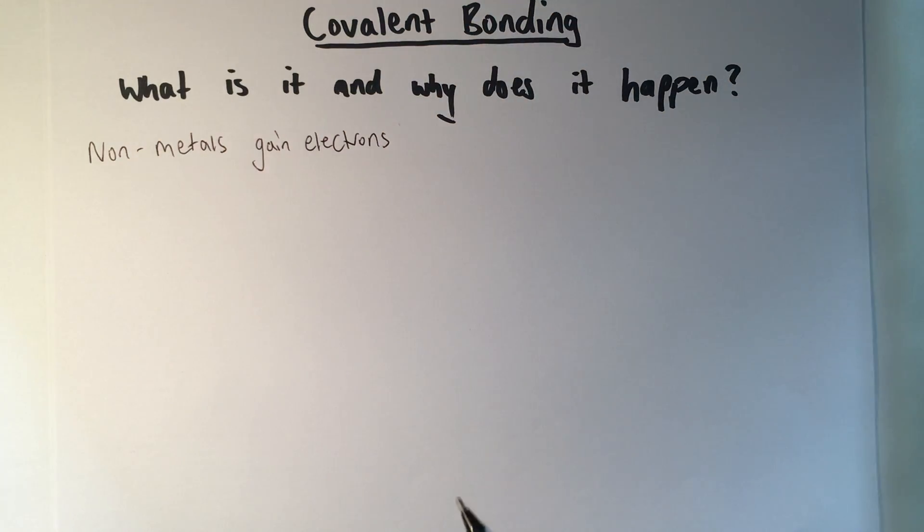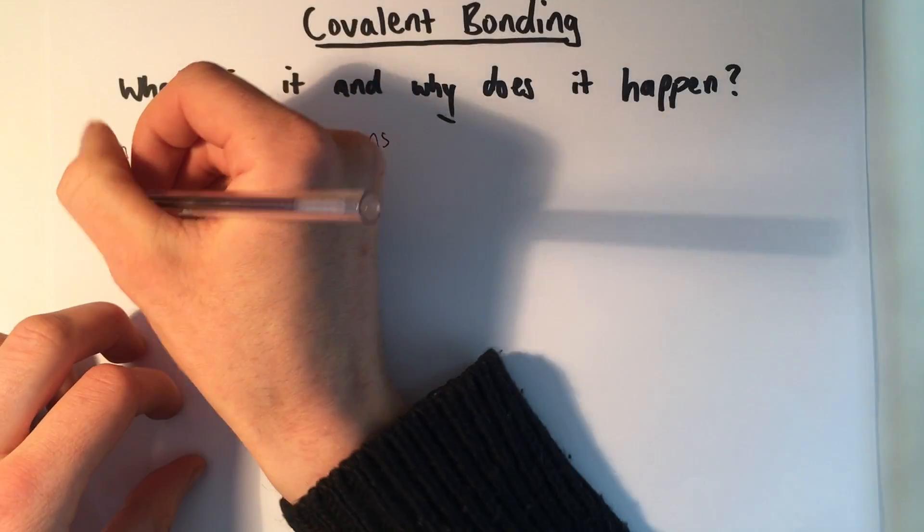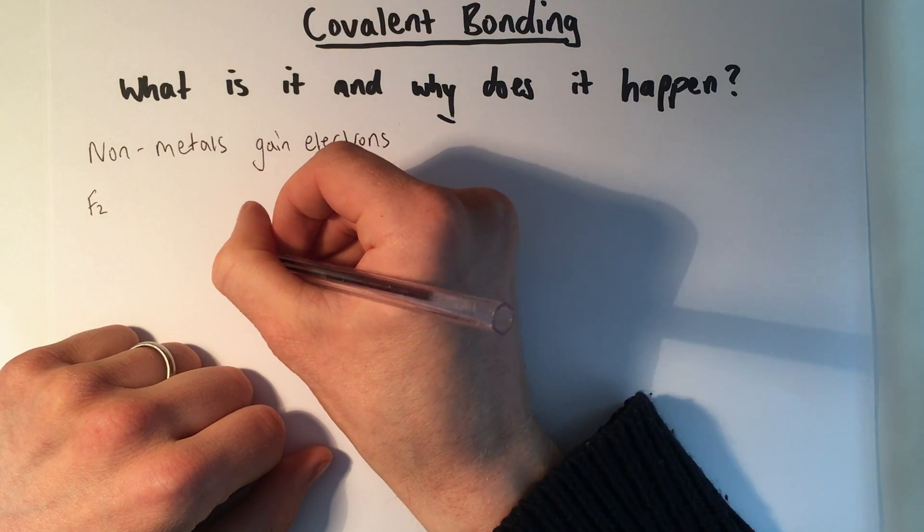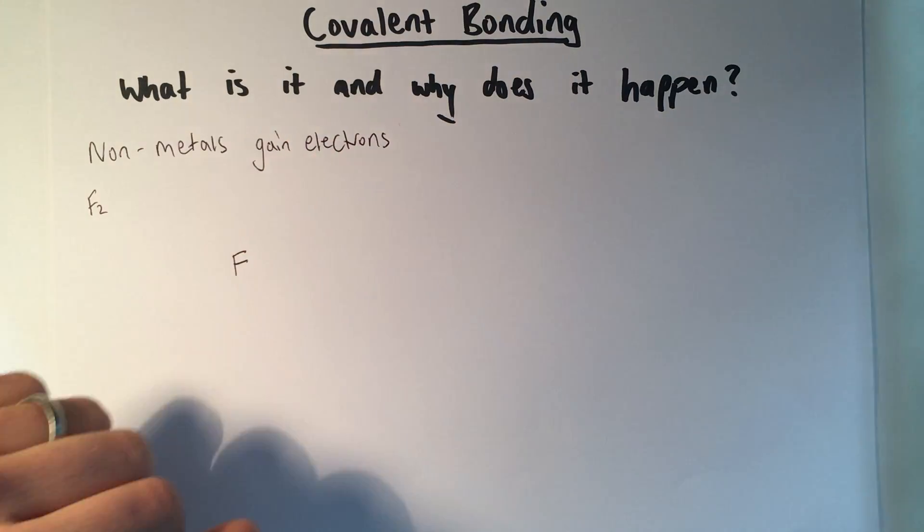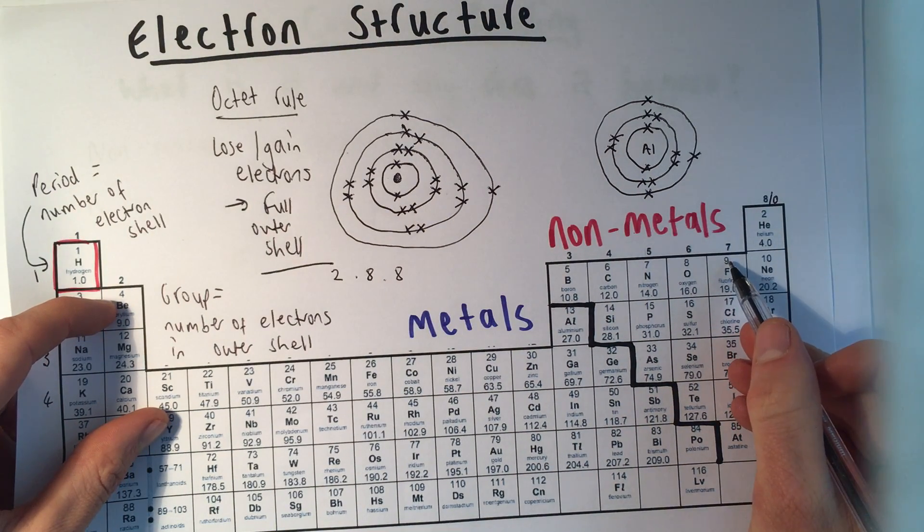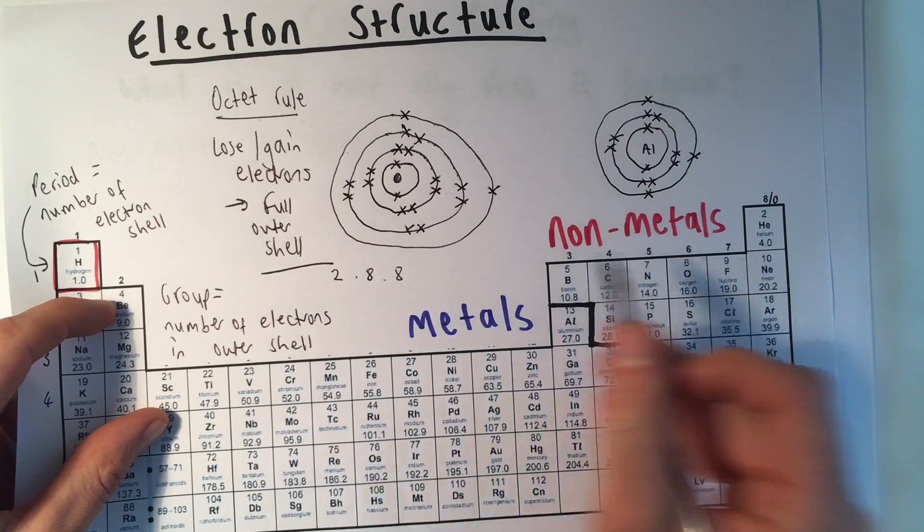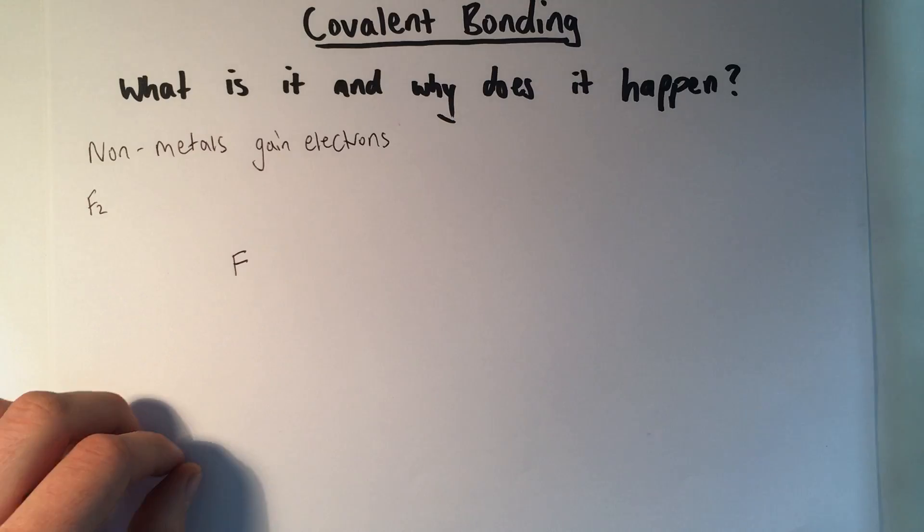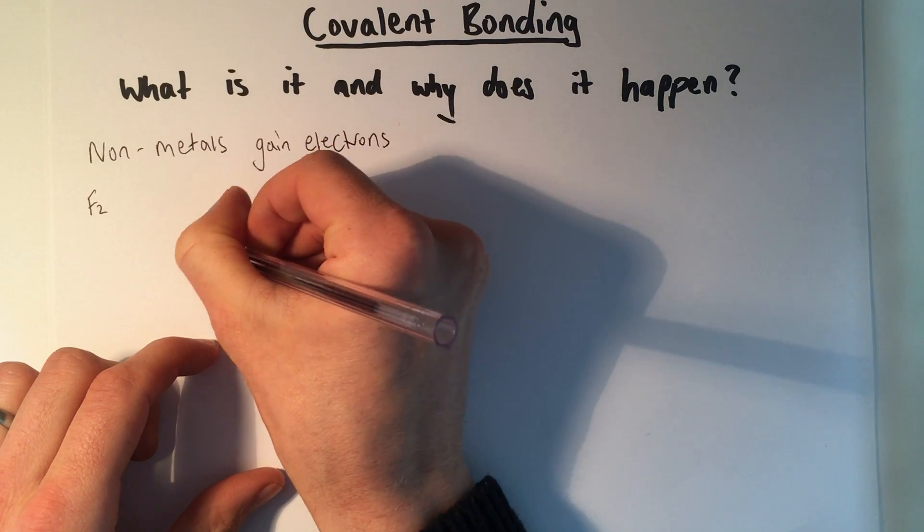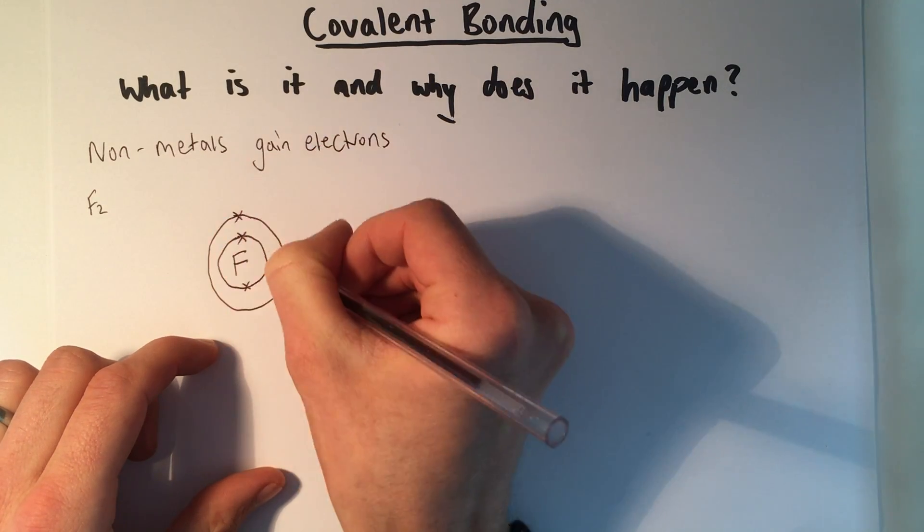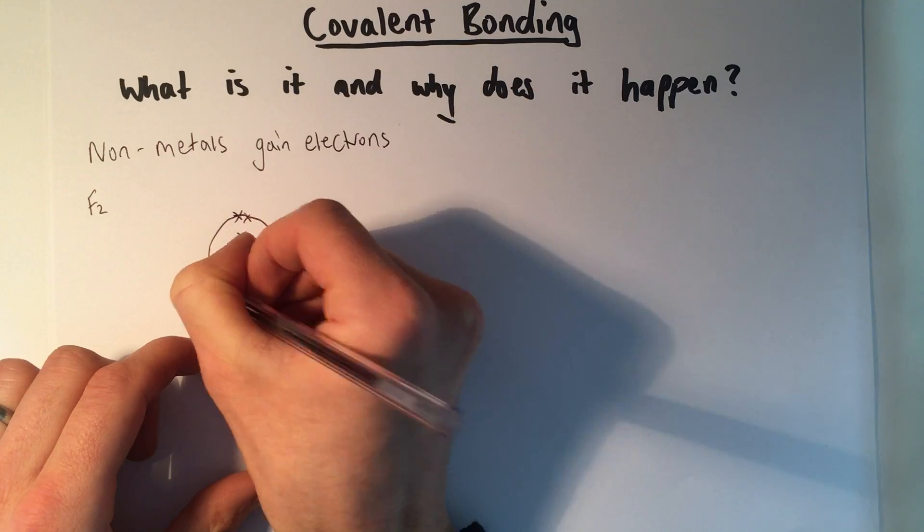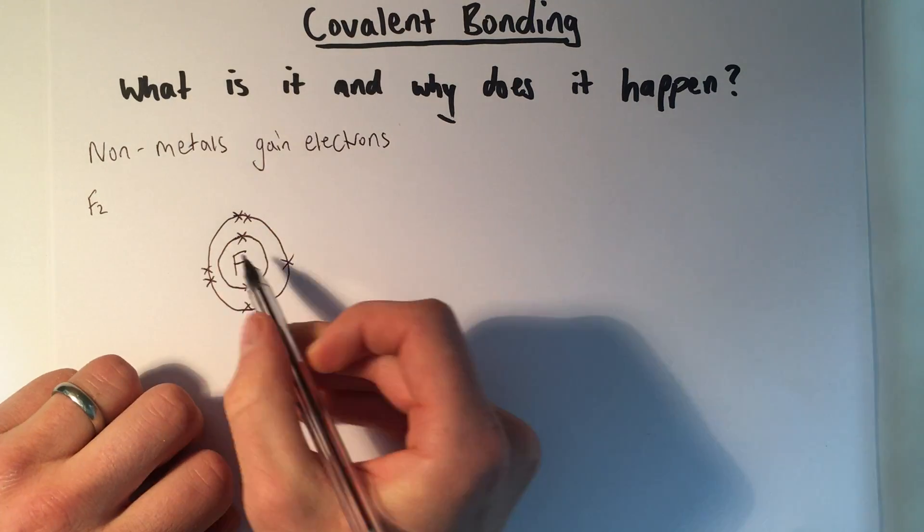I'm going to do a diagram to show what happens and why. I'm going to show the bonding in a molecule of fluorine, which is F2, because it's diatomic. If I draw an atom of fluorine from our periodic table, fluorine is in group 7, its atomic number is 9. So it's going to have 9 electrons in total, 2 in the first shell, and then 7 in the next shell. I'm going to show those electrons as crosses. So that's got its 7 electrons in its outer shell.